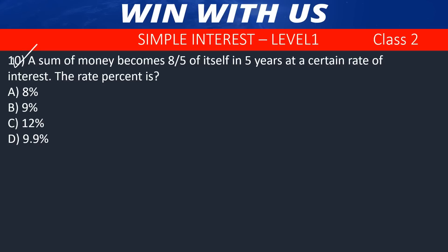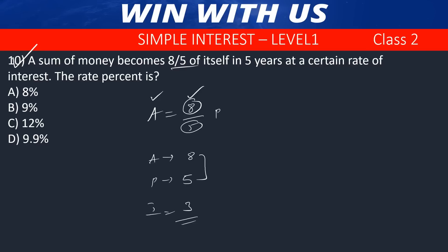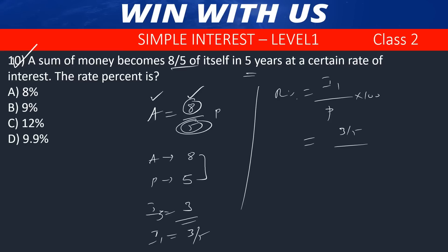Question number 10. A sum of money becomes 8/5 of itself in 5 years. Amount = (8/5)P. Interest = (8/5)P − P = (3/5)P in 5 years. One-year interest = 3/5 divided by principal. Rate = (3/5 × 1/5) × 100 = 3 by 25 into 100 = 12 percent. The answer is 12 percent.